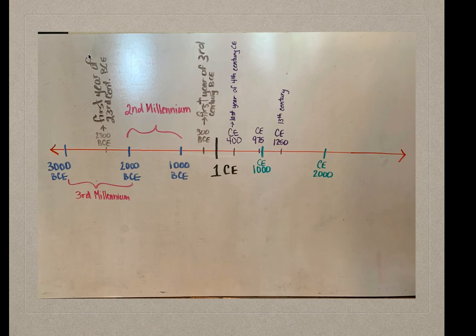In CE or AD, the reverse is true. The last year of the century gives a century its name. So, for instance, right now we are in the 21st century, which will end in the year 2100. You can see on this timeline how CE 400 is the last year of the 4th century CE, and it is in the 1st millennium CE.